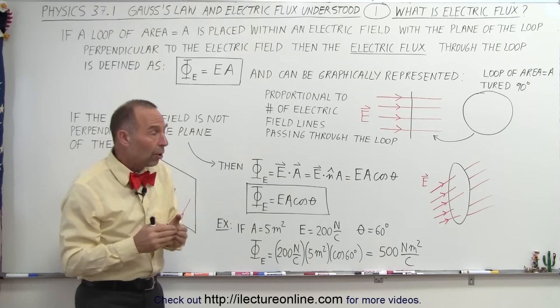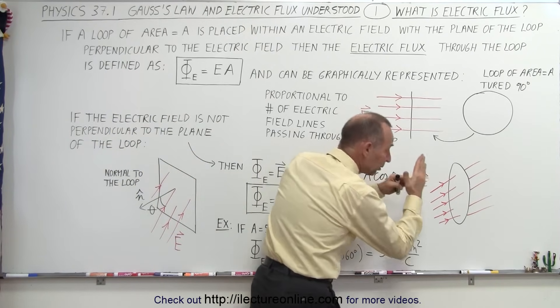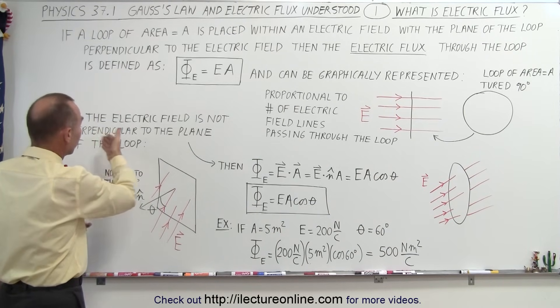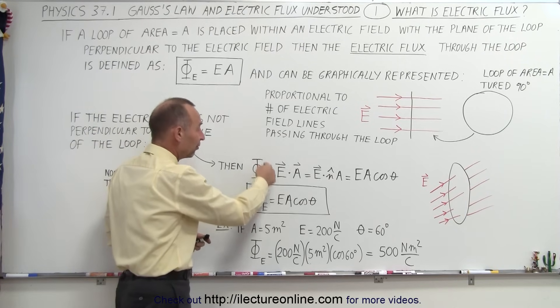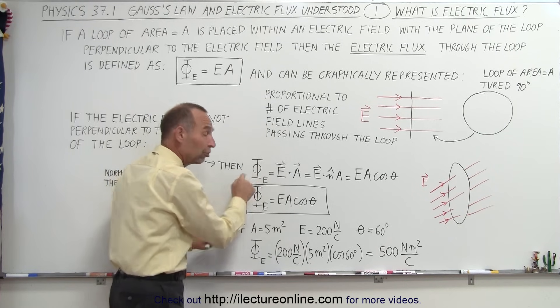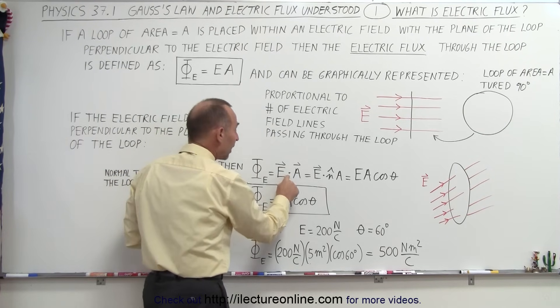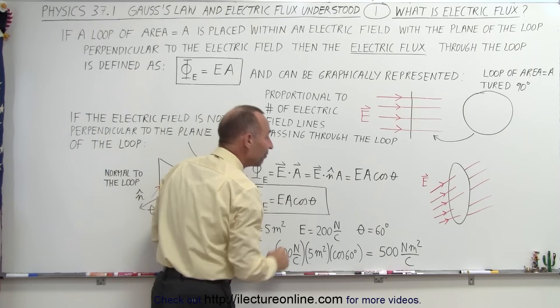What's also important is, what happens if the electric field doesn't go through the loop perpendicular to the loop? We have to consider, if the electric field is not perpendicular to the plane of the loop, then the amount of electric flux—notice we use the Greek letter phi with a little subscript e for electric flux—it will be the dot product of the electric field and the area vector.